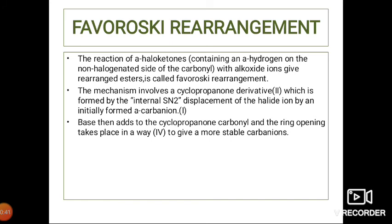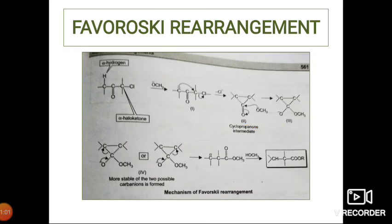The mechanism involves a cyclopropanone derivative intermediate, which is formed by the internal SN2 displacement of the halide ion by an initially formed carbanion. The base then adds to the cyclopropanone carbonyl and ring opening takes place in a way to give a more stable carbanion.